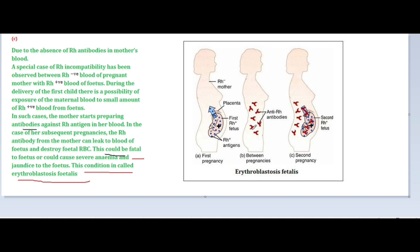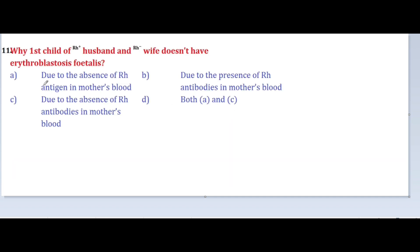So the answer is option C: due to the absence of Rh antibodies in the mother's blood during the first pregnancy. Rh antibodies are not present initially — only after the first delivery do anti-Rh antibodies form. So option C is correct: the first child is not affected due to the absence of Rh antibodies in the mother's blood.